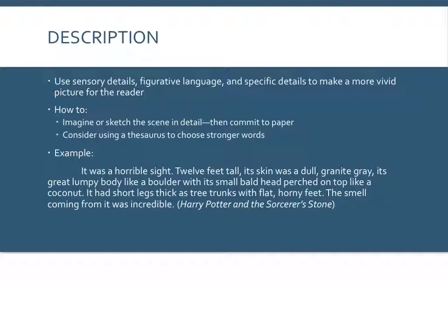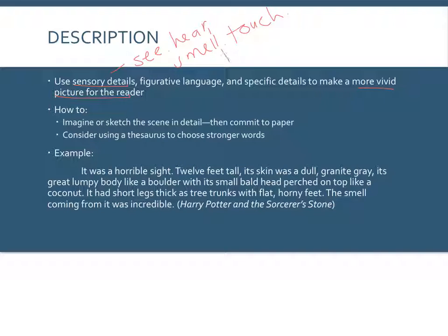Description is the third technique, and it involves using a variety of techniques to help make a more vivid picture for the reader. This also connects into W3D language use. You could use sensory details — what you would see, hear, smell, touch, and taste — to help build the picture. You could use figurative language like metaphor, simile, personification, and antithesis. You could also use specific details and well-chosen verbs and nouns. The more specific, the better, to make the picture very clear for your reader.